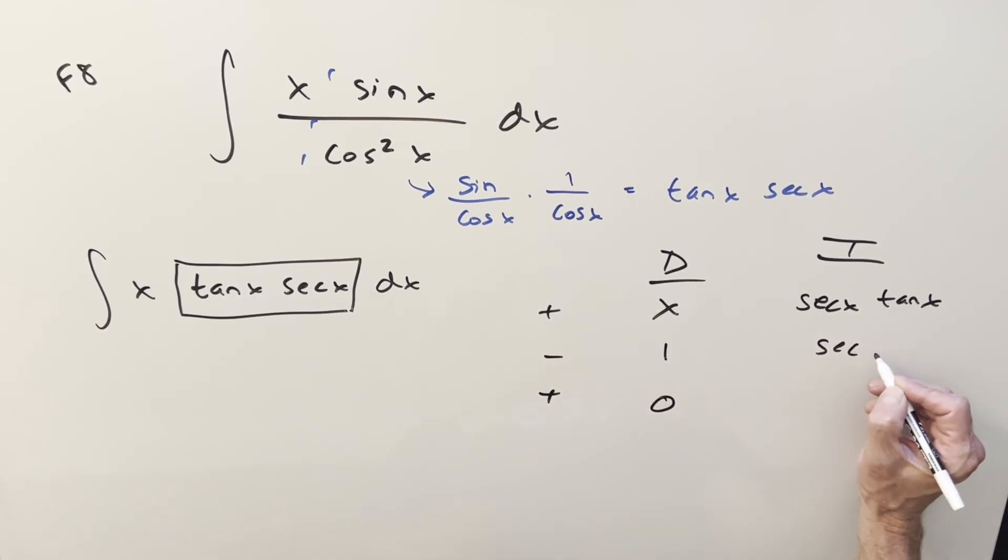Here, integral of secant x. We need to integrate one more time. Integral of that is going to be natural log absolute value, secant x plus tan x.